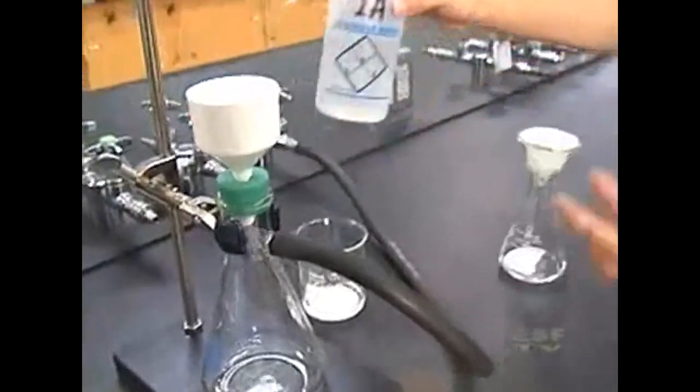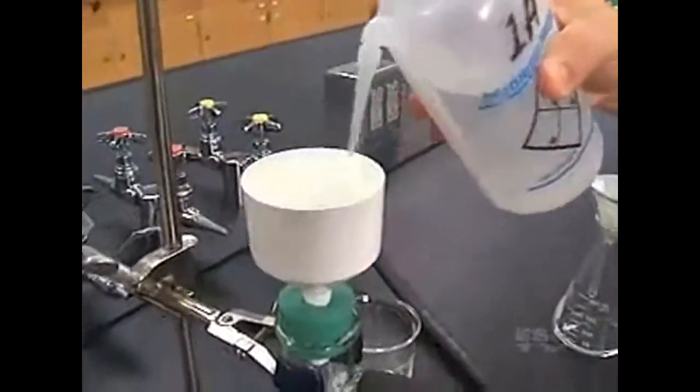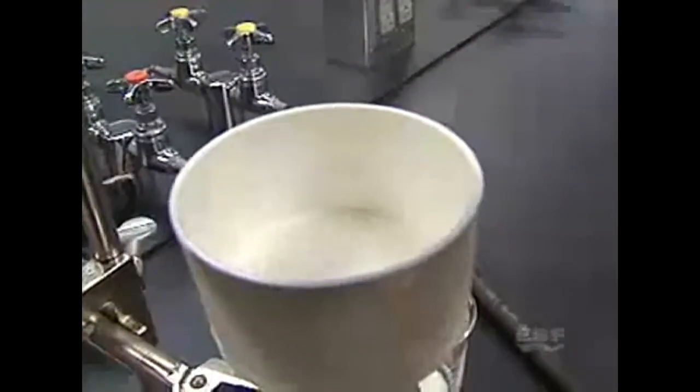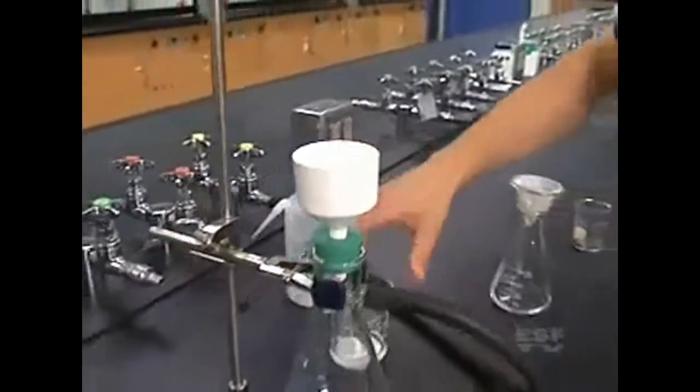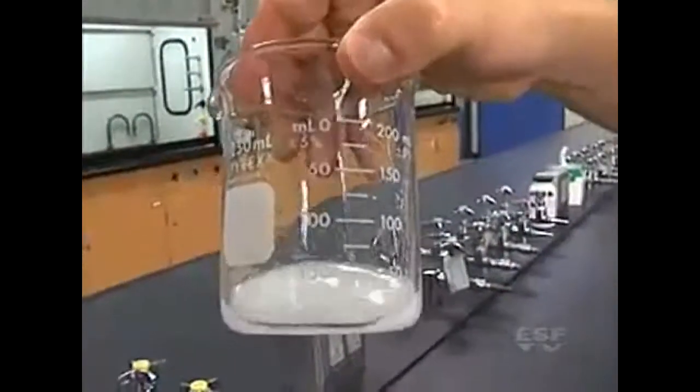To make sure that we have the filter paper stuck well onto the funnel, I'm going to use water again to just wet it down and make sure it's stuck on there. And now I can begin to filter my solution. In this case I have a cloudy white solution which I'm trying to filter out.